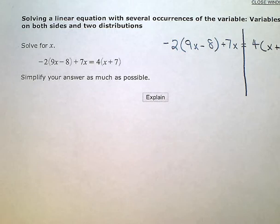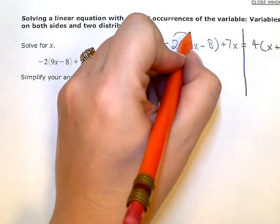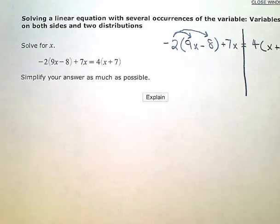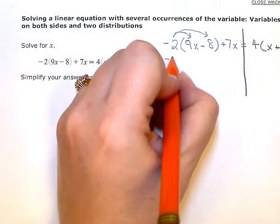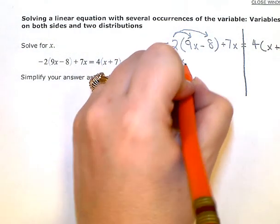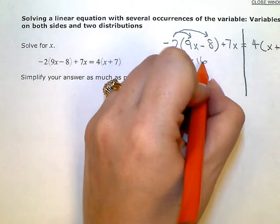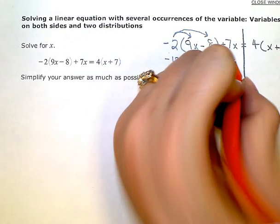Looking just at the left side, the first thing I want to do is distribute or multiply that negative 2 across the parentheses. Negative 2 times 9x is negative 18x. Negative 2 times negative 8 is positive 16, and then I also have this plus 7x on the left side.